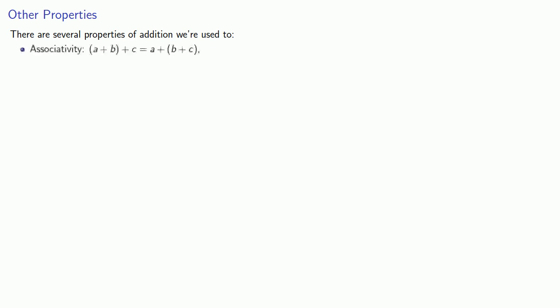There are several properties of addition that we're used to. For example, we are used to having associativity and commutativity. We should prove these. And while that makes for a good research plan, the problem does arise — how, and importantly, in what order?